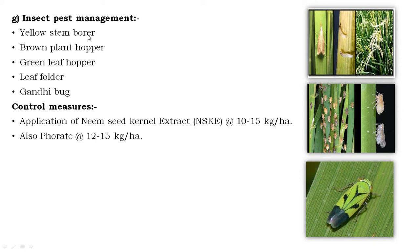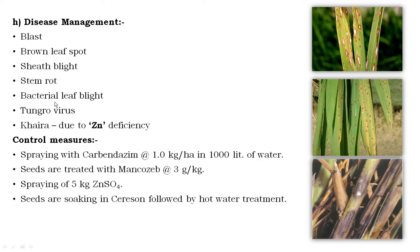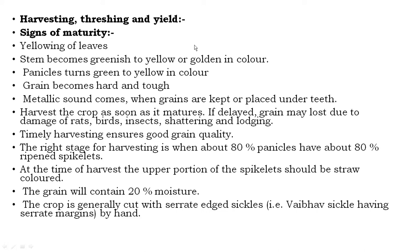Insect pest management: major rice pests are rice stem borer, brown plant hopper, green leaf hopper, leaf folder, and gundhi bug. For control, neem seed kernel extract at 10 to 15 kg per hectare is applied, and also Phorate at 12 to 15 kg per hectare. Disease management: blast, brown leaf spot, seed blight, stem rot, bacterial leaf blight, tungro virus, and sheath blight are major diseases. Control includes spraying Carbendazim at 1 kg per hectare in 1000 liters of water, treating seeds with Mancozeb at 3 gram per kg, and spraying 5 kg zinc sulfate; also seed soaking followed by hot water treatment.